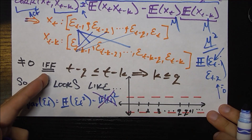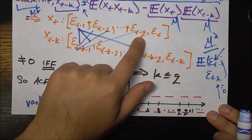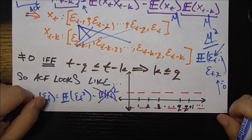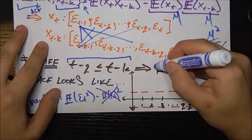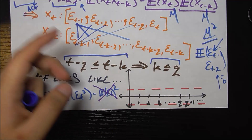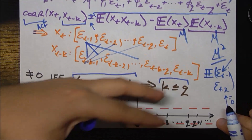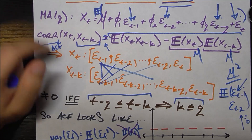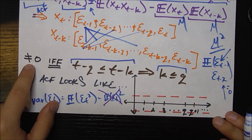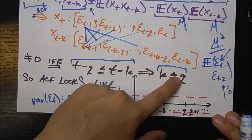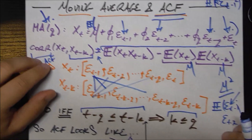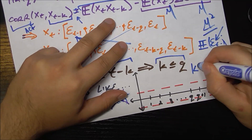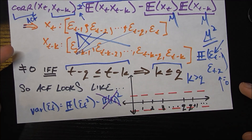There is no overlap only if t-q, the final error in x_t, is less than or equal to t-k, the first error in x_{t-k} — meaning the two lists don't intersect. This implies that k is greater than q. So the autocorrelation between x_t and x_{t-k} is not equal to zero if and only if k is less than or equal to q, the generating order of the moving average model. Conversely, if k is greater than q, we get zero for all those autocorrelation functions.